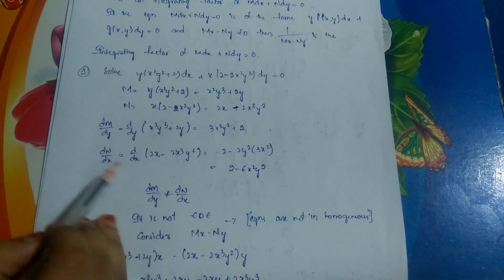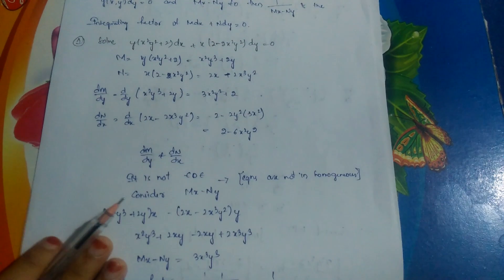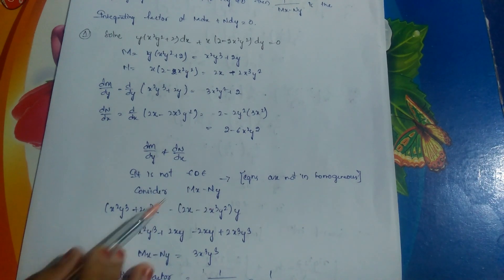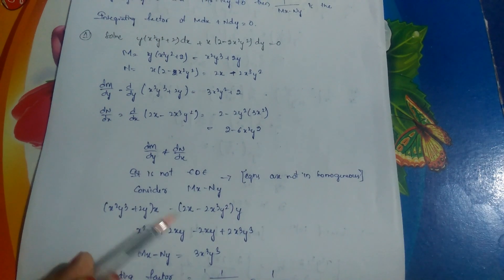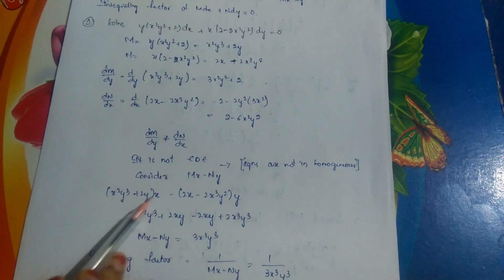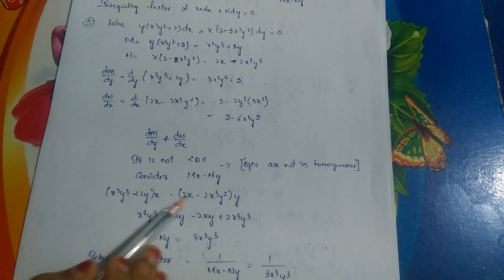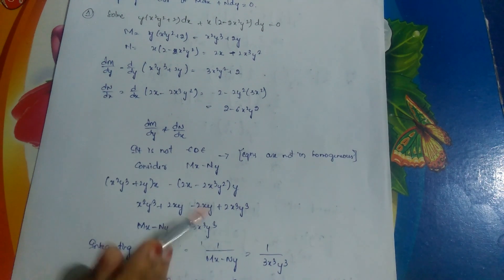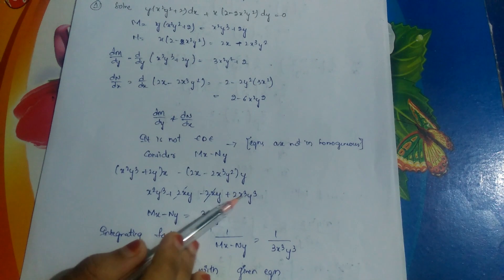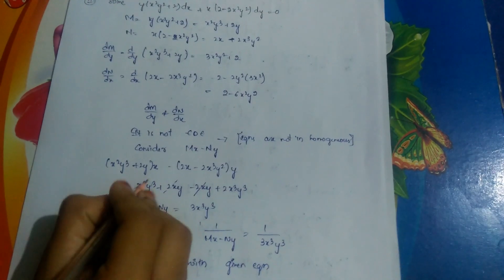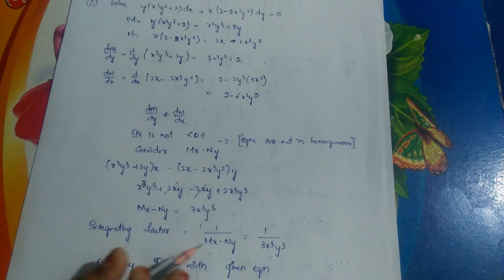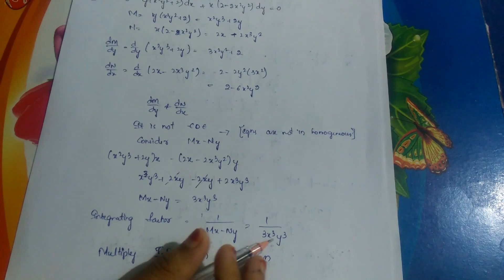Since ∂M/∂y ≠ ∂N/∂x, it is not an exact differential equation, and the equation is also not homogeneous. So we consider Mx - Ny. M·x - N·y = (x²y³ + 2y)·x - (2x - 2x³y²)·y = x³y³ + 2xy - 2xy + 2x³y³. The ±2xy terms cancel, giving x³y³ + 2x³y³ = 3x³y³. Thus the integrating factor is 1/(Mx - Ny) = 1/(3x³y³).